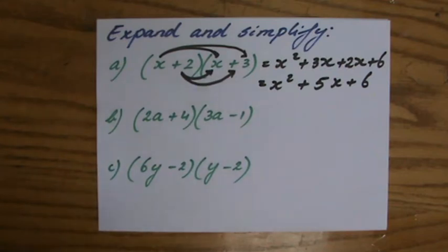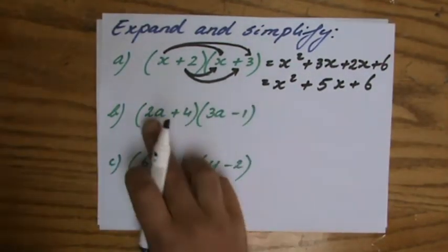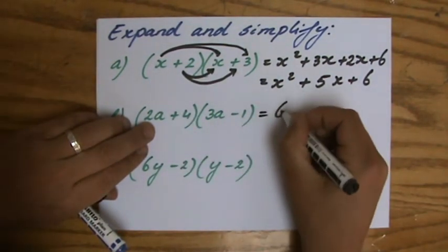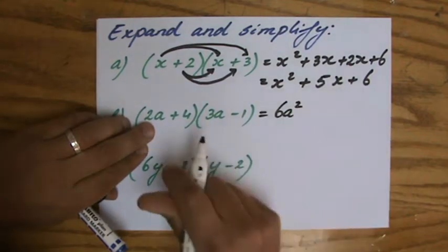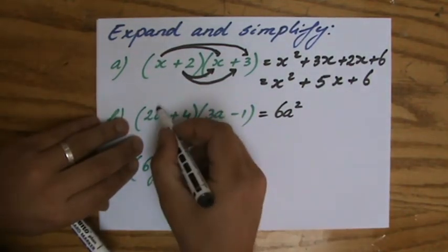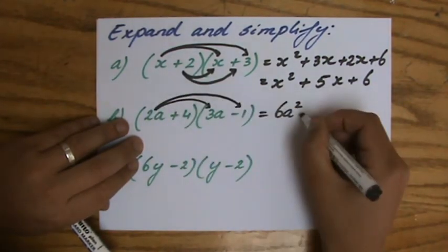I should get a new marker because this one is not very clear anymore, I apologize. Quickly find a better one. The next question: 2a times 3a, so that equals 6a squared.